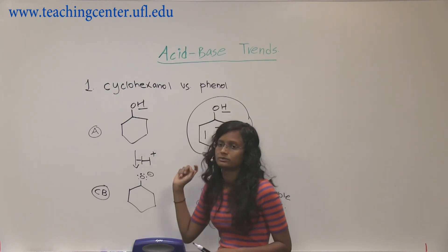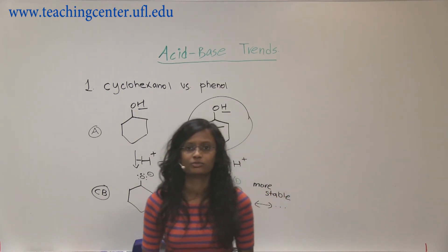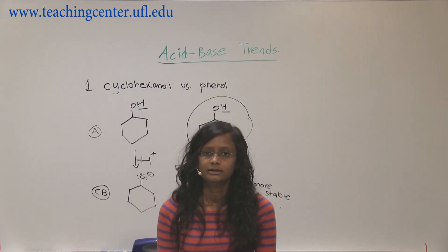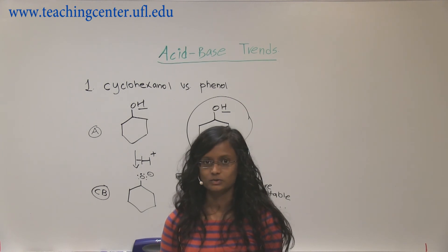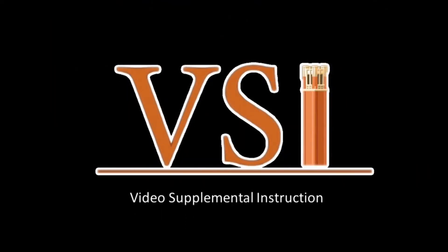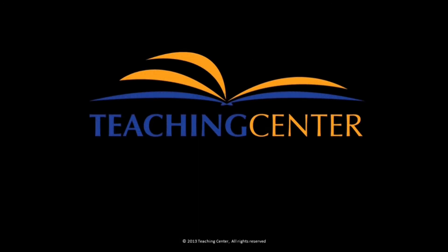And then, find the more stable conjugate acid or conjugate base. So, that way, what it came from would be your stronger acid. All right. Let's do the next one.